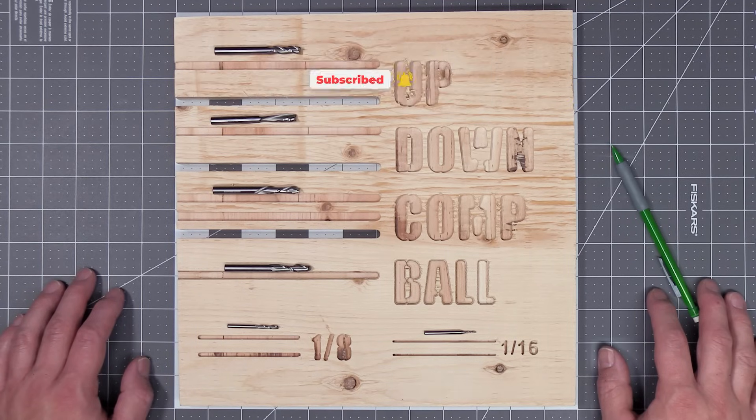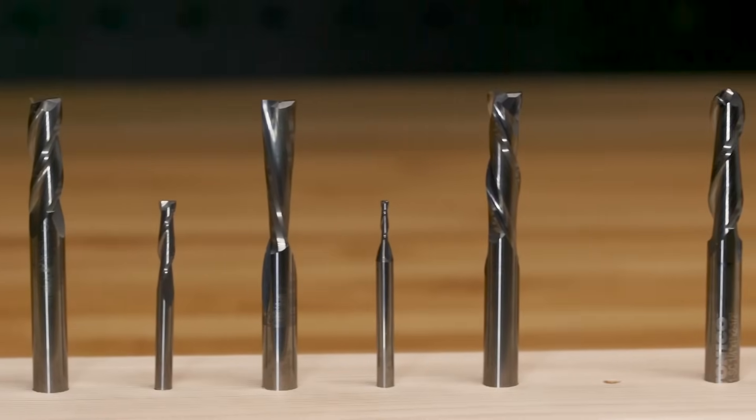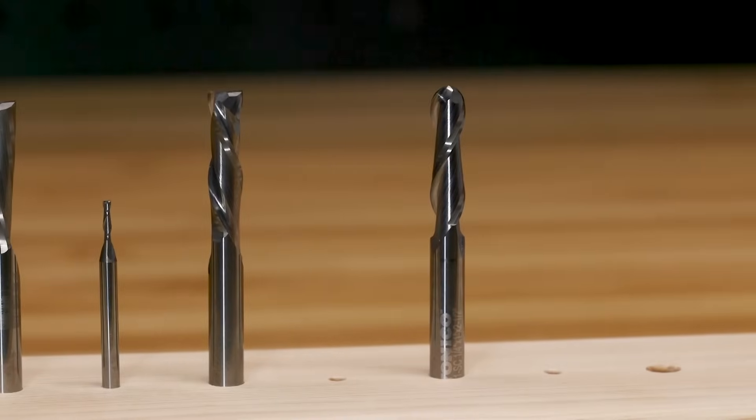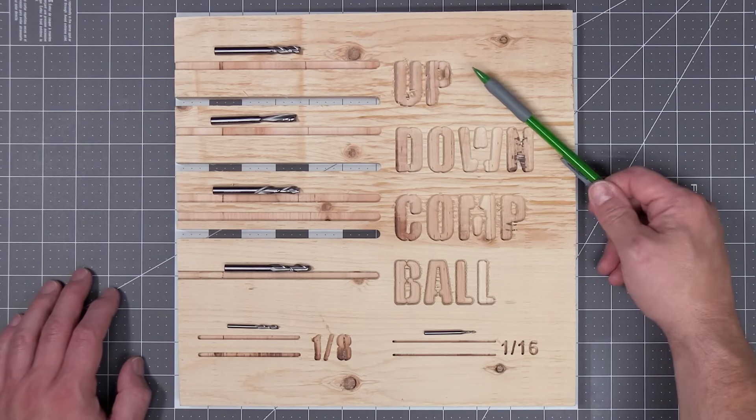The bits we'll be looking at today are called end mills, also known as spiral bits. They'll probably be the first bits you'll use on your machine. We're going to be looking at four types of quarter inch end mills: an up cut bit, a down cut bit, a compression bit, and a ball bit.